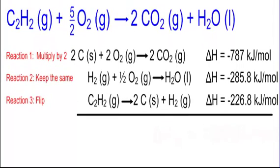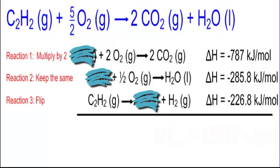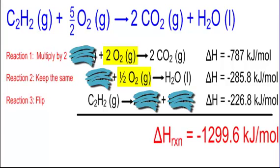When I add everything up, look at what cancels out: the two carbons cancel in reactants and products, the hydrogen gases cancel, and the oxygens combine to give two and a half (five halves). Everything else works out perfectly. Adding all the delta H values gives negative 1299.6 kilojoules per mole — and that's the heat of the reaction.